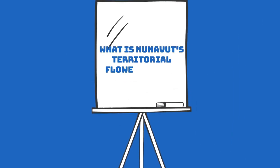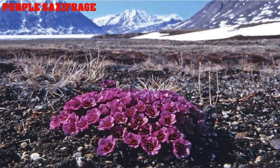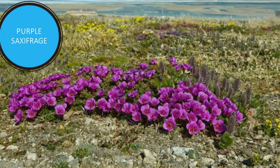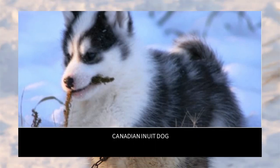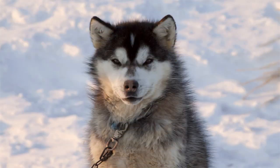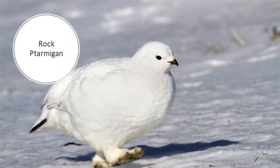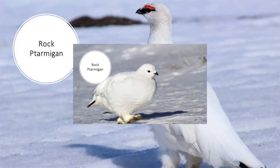What are Nunavut's territorial symbols? The territorial flower is the purple saxifrage. Its animal is the Canadian Inuit dog. And its bird is the rock ptarmigan.